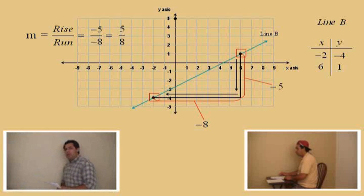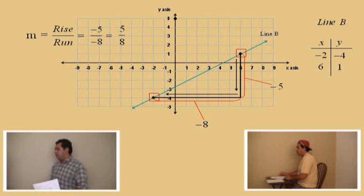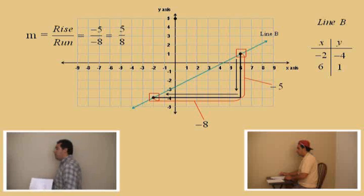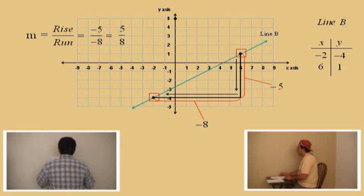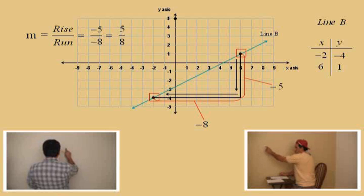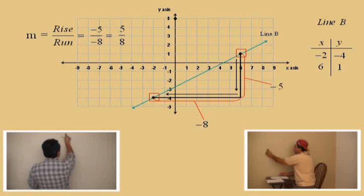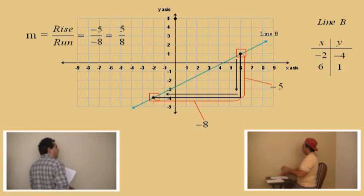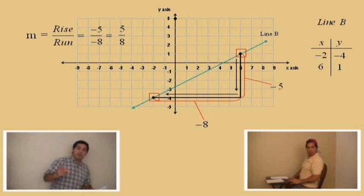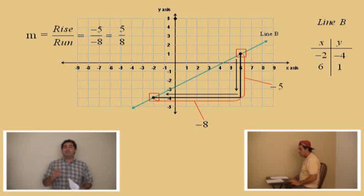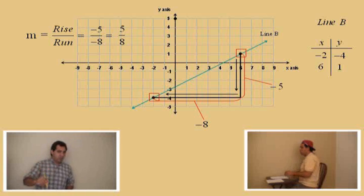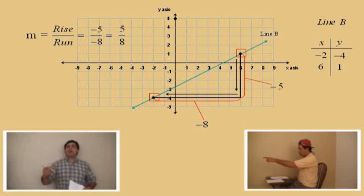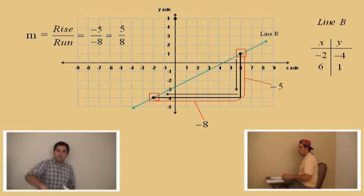You might be thinking: why is rise over run positive five over positive eight? Well, it is the same as negative five over negative eight. See, if we were to start at this point over here and count up five and then move right eight, you'd end up at the other point. So there are two ways of doing these types of problems. If it's giving you trouble, talk to your facilitator, talk to your tutor, or come to Mr. Perez's office hours.